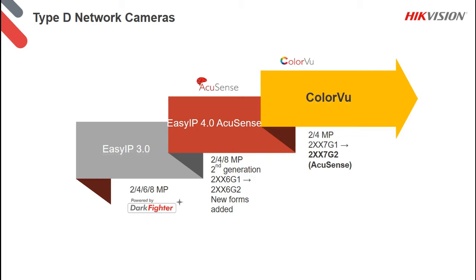We'll look at AccuSense EasyIP 4.0 — still an entry-level or run rate type of camera, but with AccuSense functionality built in. It comes in 2, 4, and 8 megapixel resolutions. It's the second generation — you'll see it marked as G2. The G1 is the first generation; models ending with a 6 at the back are G2, the second generation of AccuSense. And then the ColorView, currently in 2 and 4 megapixels, also has a second generation G2, which now includes AccuSense functionality.